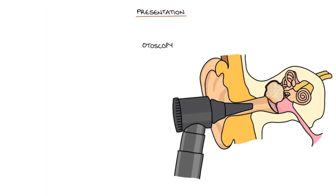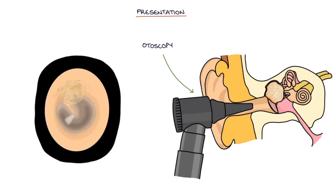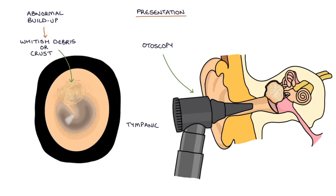Otoscopy, where an otoscope is used to look down the ear canal, can show an abnormal buildup of a whitish debris or a crust in the upper tympanic membrane. However, it may not be possible to visualise the eardrum if discharge or wax are blocking the canal.